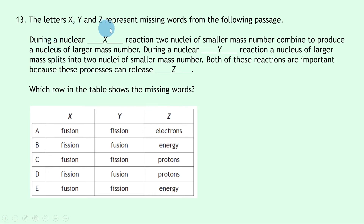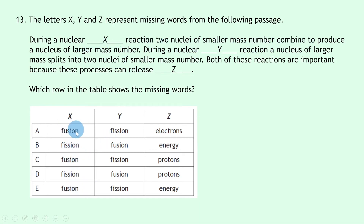Question 13 has three missing words X, Y and Z. The first statement describes two smaller nuclei combining to produce a larger nucleus — that is nuclear fusion. The second describes a larger nucleus splitting into two smaller nuclei — that is nuclear fission. Both reactions release energy. So the answer is fusion, fission, energy — answer E.